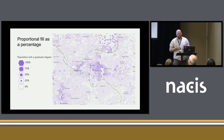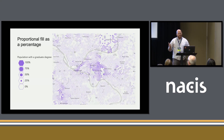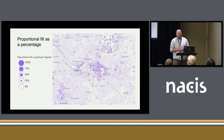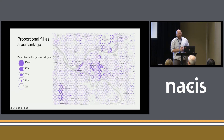Something I think is particularly effective with this style is that it's really good at visualizing percentages. If you have a full circle or full shape, that's 100 percent. If you have any value below that, it gradually scales down to zero. What we're looking at here is the percentage of the population with a graduate degree. This checks out if you look at the university area of the city — the majority of the population, about two in every three people, hold a graduate degree in some of these areas.